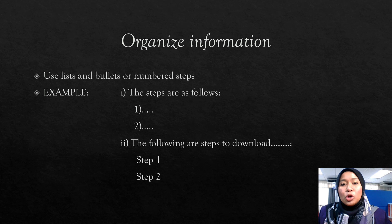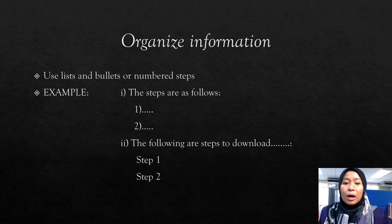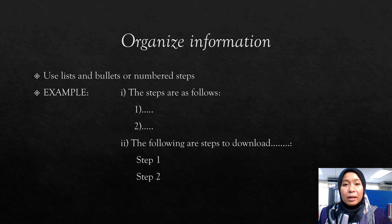Typically you should use a numbered list when you need to stress the order of the listed items. For example, you would start with: the steps are as follows — number one, number two. Or you can use: the following are steps — step one and step two.